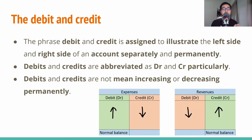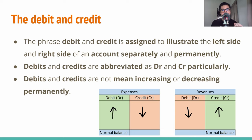In this slide, I will focus on debits and credits and answer some questions. The first question is: why are debits and credits similarly located at the left and right sides in the two accounts? The phrase debits and credits is a sign to illustrate the left and right sides of an account separately and permanently. Debits and credits are abbreviated as DR and CR respectively, and they do not mean increasing or decreasing. As you can see in the small picture at the bottom of this slide, the way debits and credits work has changed dramatically in the expense and revenues account. As a result, debits and credits cannot permanently represent increasing or decreasing of the accounts.